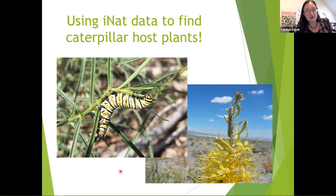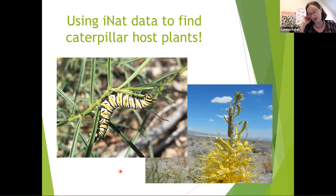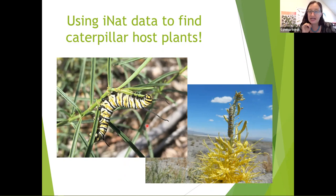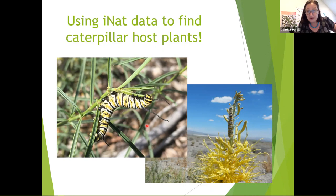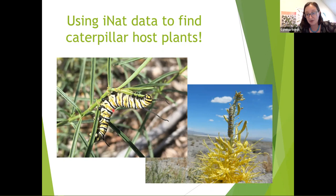Now I'll talk about how I have used iNaturalist data and how other scientists have done the same. One of the ways I use it is to find the food that caterpillars need to eat. Here we have a monarch caterpillar eating thin-leaf milkweed. Western monarch populations are tumbling — we've lost almost 99% of what used to be here for monarchs on the west coast. So it is really important to document where milkweed populations are. There's actually a graduate student who studies monarchs and milkweed at UNR who has used iNat data to find new populations of milkweed and go out and survey it for monarchs.